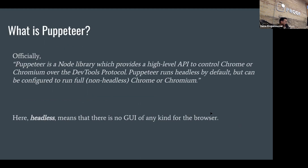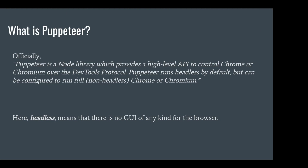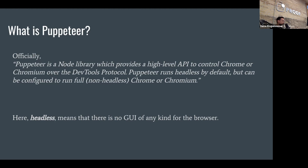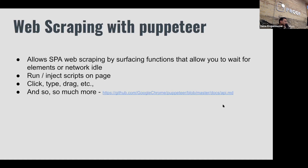For those of you who haven't heard of Puppeteer: officially, Puppeteer is a Node library which provides a high-level API to control Chrome, Chromium, or the DevTools protocol. It runs headless by default and can be configured to run headful. Headless means there's no graphical user interface — it's an API you can control separately, doing whatever you want programmatically. It's a browser that robots can control.